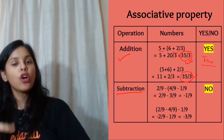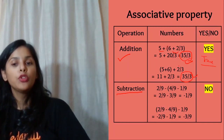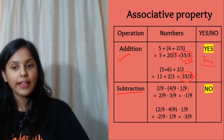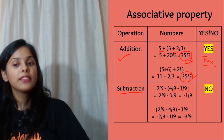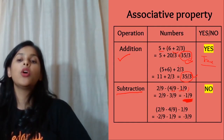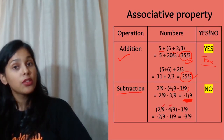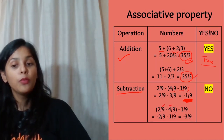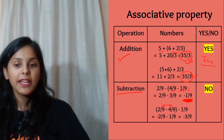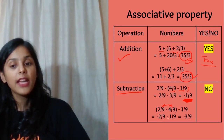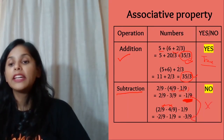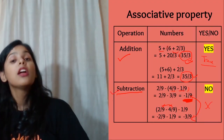For associative property in subtraction, we follow BODMAS — solve brackets first. With 2 by 9 minus, bracket 4 by 9 minus 1 by 9, we get 2 by 9 minus 3 by 9, which is minus 1 by 9. When we change the bracket to bracket 2 by 9 minus 4 by 9, minus 1 by 9, the answer is different. The answers are not the same, so associative property does not hold for subtraction.